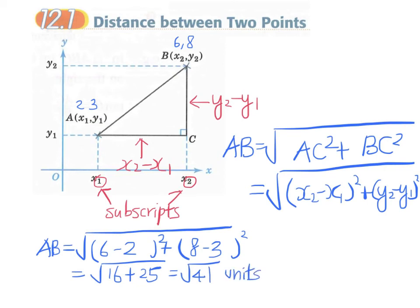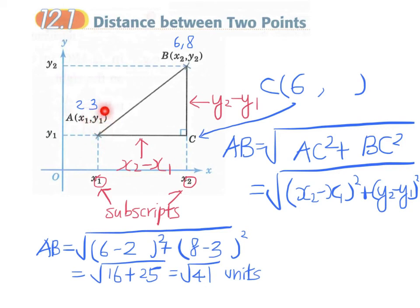Finally, what are the coordinates of point C? The x coordinate of point C is 6, which equals the x coordinate of point B, because they are on the same vertical line. The y coordinate of point C equals the y coordinate of point A, because AC is on the same horizontal line — so that is 3. Therefore point C is at (6, 3).